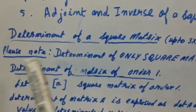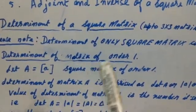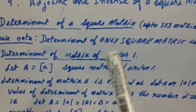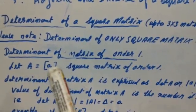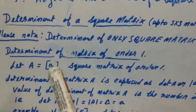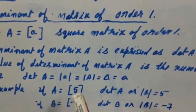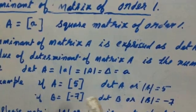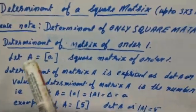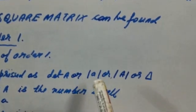This is very important: the determinant of only a square matrix can be found — we should never forget this. We start with the determinant of a matrix of order one. A matrix of order one has only one element, so its determinant will be that element itself. For example, determinant of matrix A with element 5 will be 5, and determinant of matrix B with element minus 7 will be minus 7. We can express the determinant of a matrix in three ways: det(A), |A|, or D.